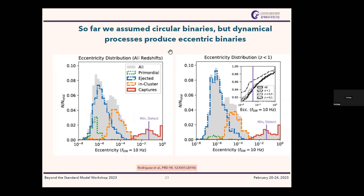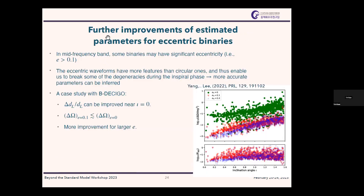We have so far assumed that all black hole binaries are on circular orbits. But a small fraction may be in eccentric orbits. For those, we can improve both localization and distance estimation even further — by more than a factor of 10 compared to circular orbits. So while the number of eccentric systems may be small, they can provide very precise information about distances and angles, and be very useful for future measurements.